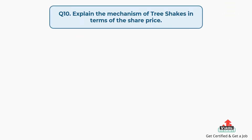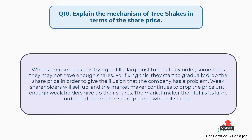Question number 10: Explain the mechanism of tree shakes in terms of the share price. When a market maker is trying to fill a large institutional buy order, sometimes they may not have enough shares. For fixing this, they start to gradually drop the share price in order to give the illusion that the company has a problem. Weak shareholders will sell up, and the market maker continues to drop the price until enough weak holders give up their shares. The market maker then fulfills its large order and returns the share price to where it started.